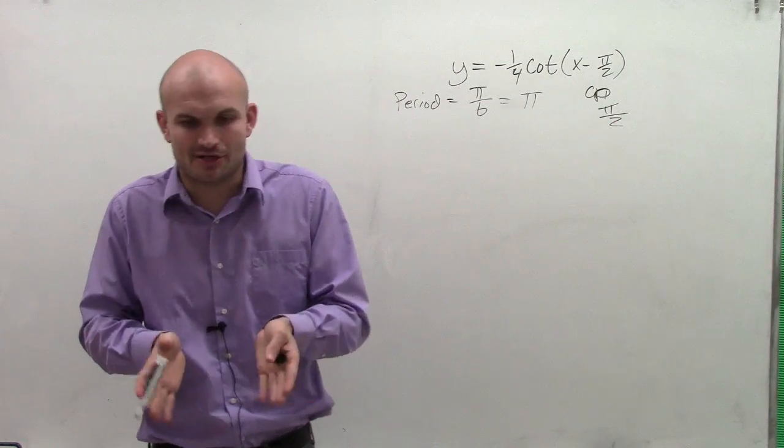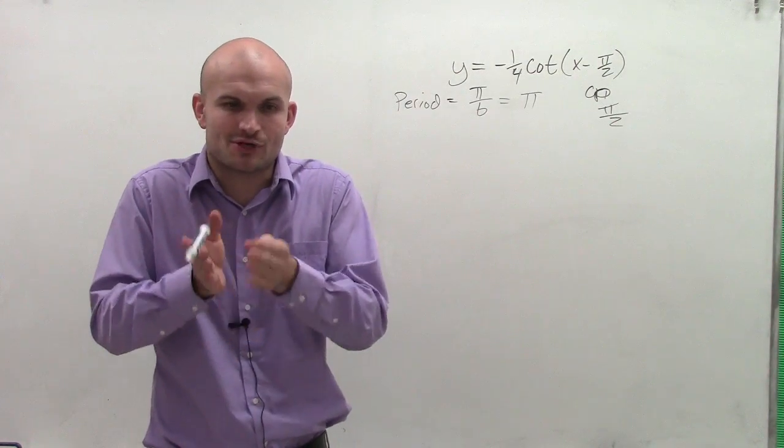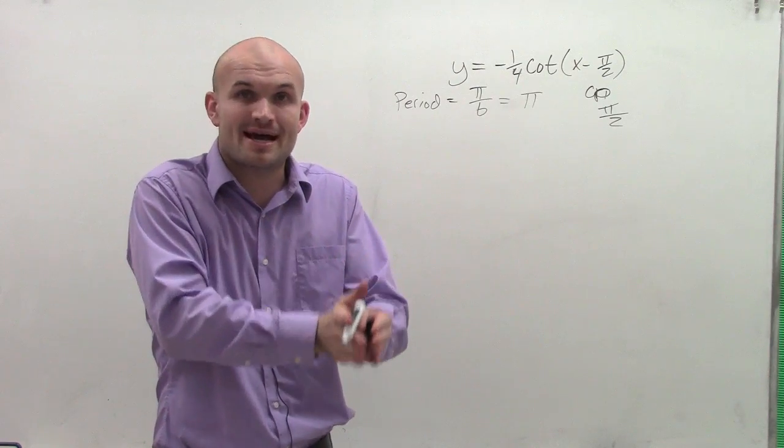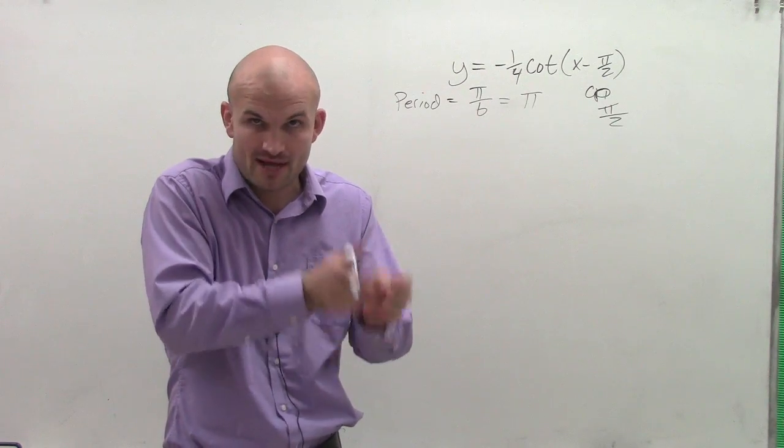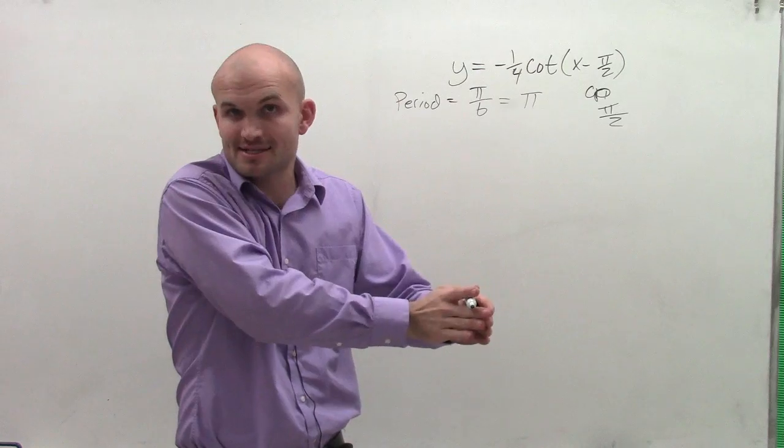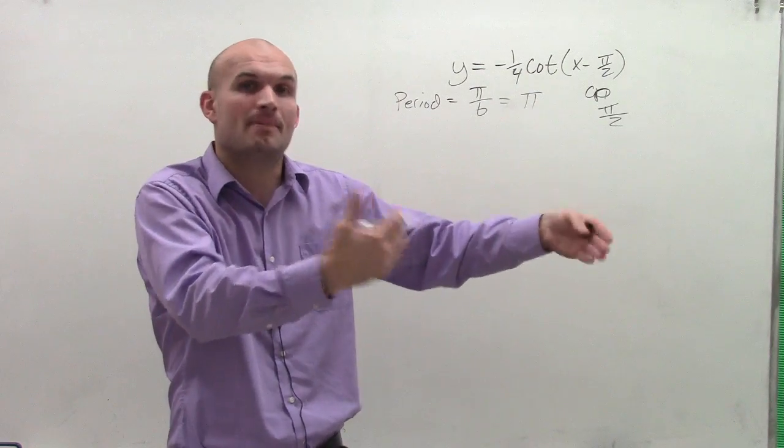So what that means is if I start at a horizontal asymptote, my next critical point, which is my x-intercept, is going to be pi halves away. And then the next critical point, which is my next intercept, is also going to be a distance pi halves away.